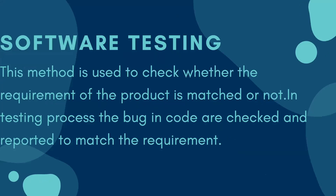Let's first understand what software testing is. It is simply a method to check whether the requirements of the product are matched or not. In the testing process, bugs in code are checked and reported to match the requirements. If a developer develops code, that code is tested by the tester to verify that the requirement given by the client and the work done by the developer are the same. If there are bugs, they are reported and resolved. That's the work of software testing.